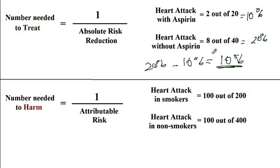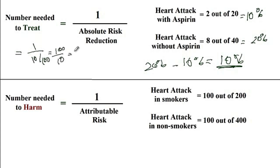The attributable risk reduction with aspirin is 20% minus 10%, which equals 10%. So the absolute risk reduction is 10%. Therefore, NNT = 1 divided by 10% = 100 divided by 10 = 10. You will need to treat 10 patients with aspirin for one less person to develop a heart attack.